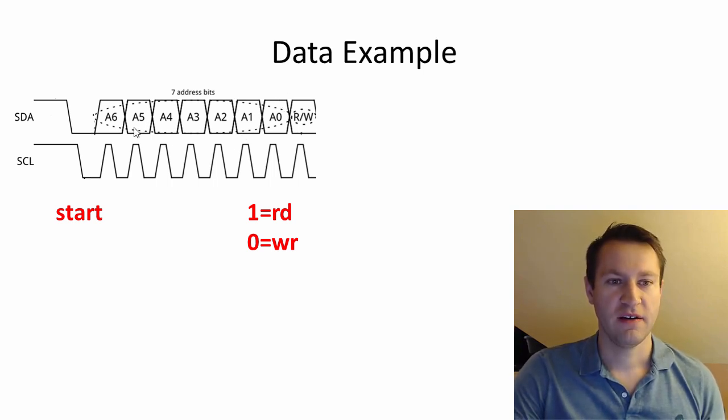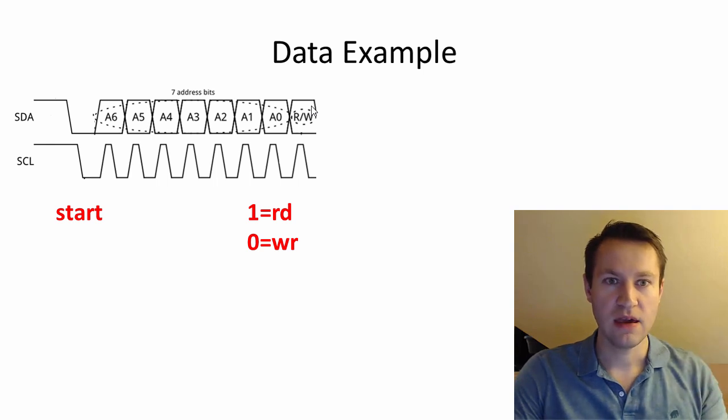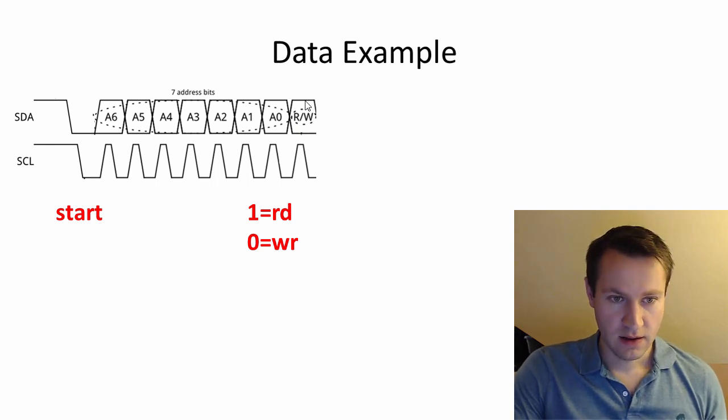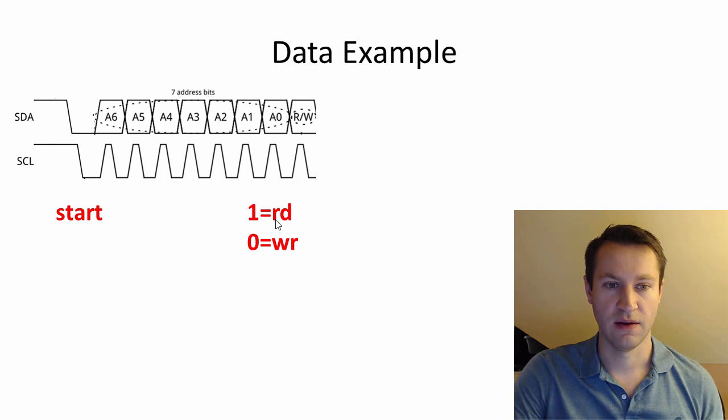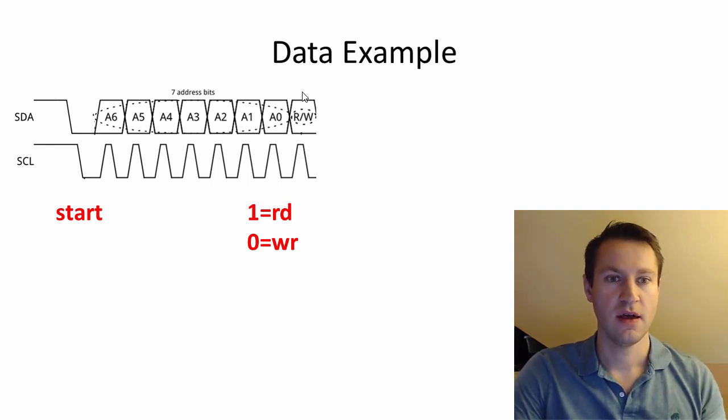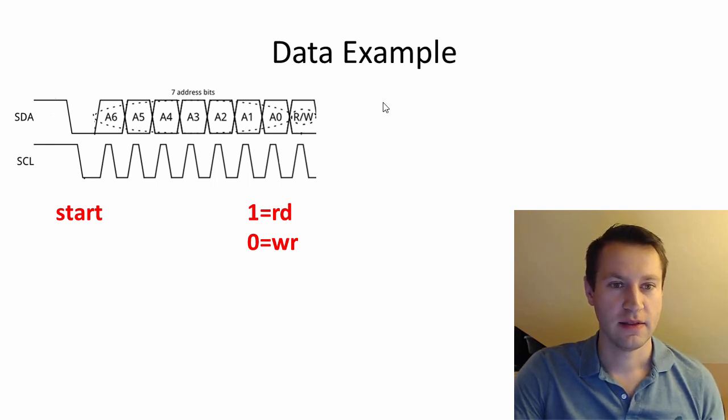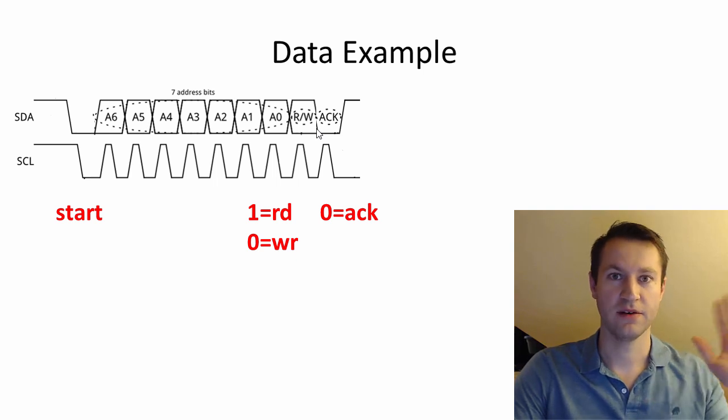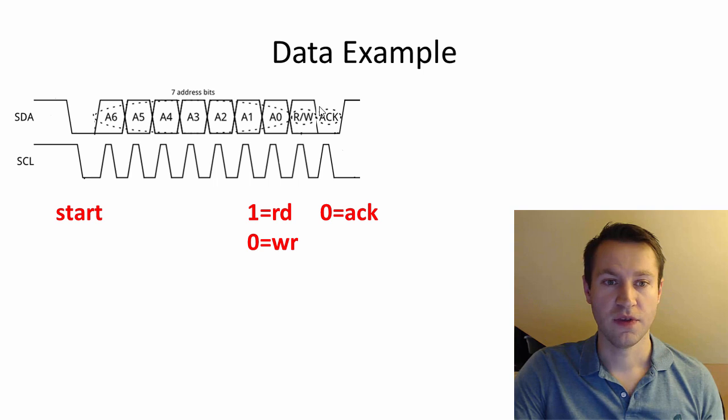Okay, so you've sent your particular address bit. The slave says, oh, he's talking to me. I better pay attention. Okay, does the master want to write to me or read from me? And that's determined by this eighth bit here in the beginning, in the first word or byte that the master sends. So a one on this eighth bit indicates a read command, meaning I want to read data from you, Mr. Slave, and a zero indicates that you want to write data to Mr. Slave.